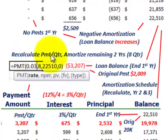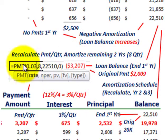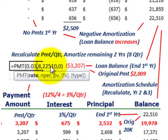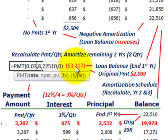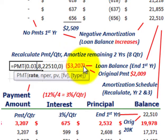Now we have to recalculate our payments for the remaining two years — the next eight quarters. Using Excel's payment function with 3% per quarter, eight quarters, and a present value of $22,510 (the negatively amortized balance at the end of year one), the new quarterly payment comes out to $3,207.